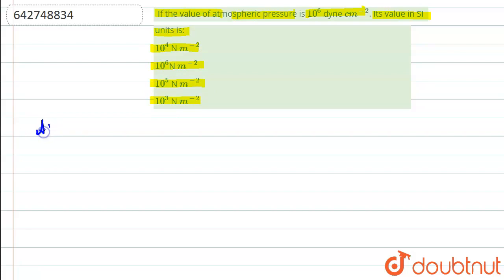So converting the atmospheric pressure into SI units. Solution: Given atmospheric pressure is 10 to the power 6 dyne per centimeter square.